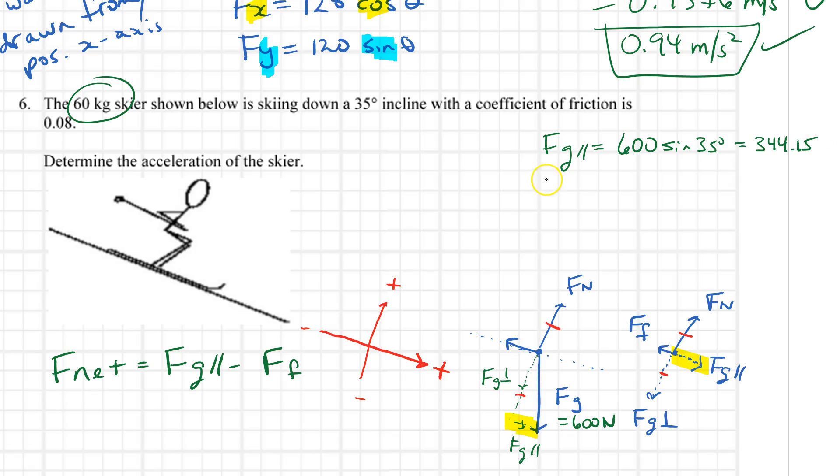My Fg perpendicular is going to be 600 times the cosine of 35 degrees. That's 491.49 newtons. Now my normal force is also going to be 491.49 newtons. The only difference is that it is in the positive direction.